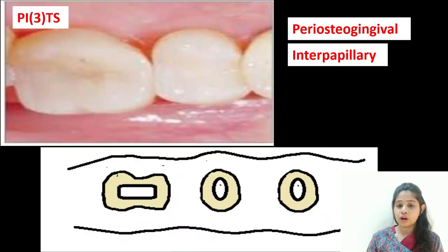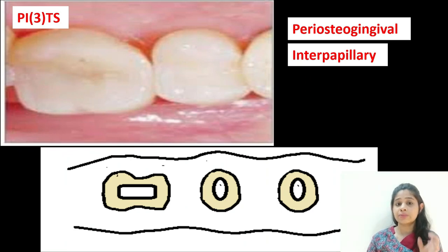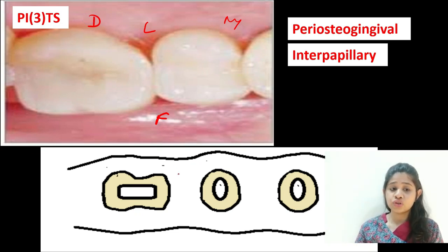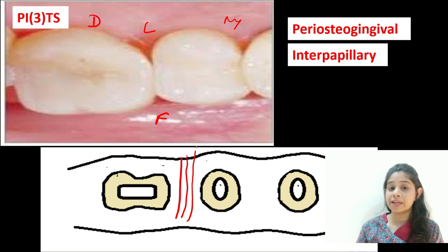The next group is the interpapillary fibers. As the term suggests, they are present between the interdental papilla region. In an occlusal view — with facial, lingual, mesial, and distal aspects — the interpapillary group extends in a faciolingual direction and helps support the papilla itself. It is present in the interproximal region between teeth.